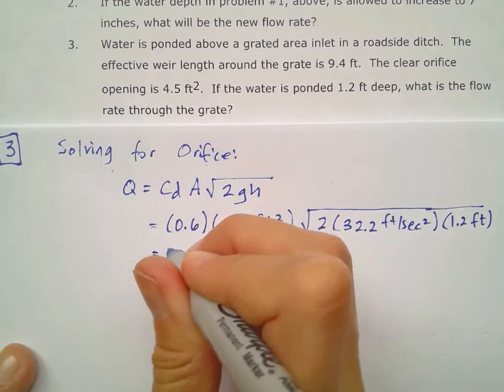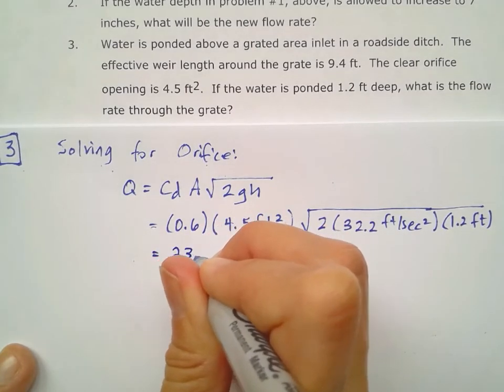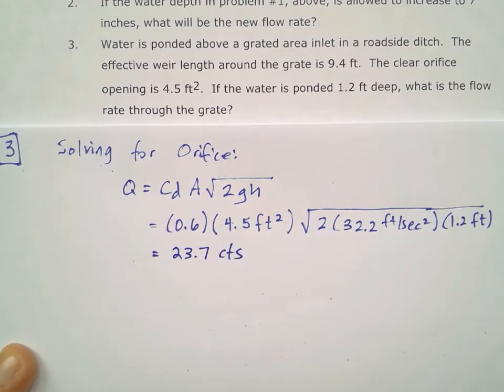Go ahead and solve all that and I do get 23.7 cubic feet per second for that inlet acting as an orifice.